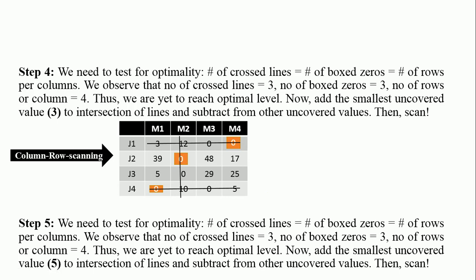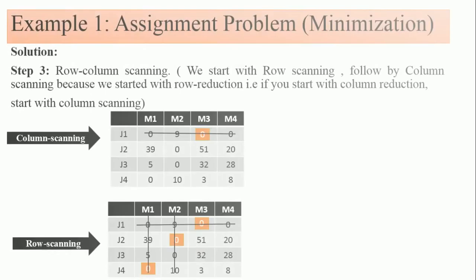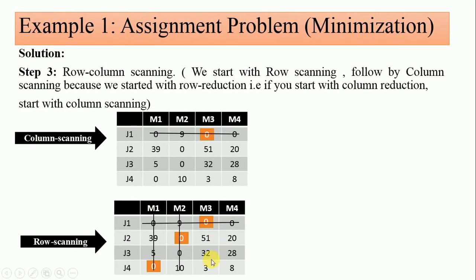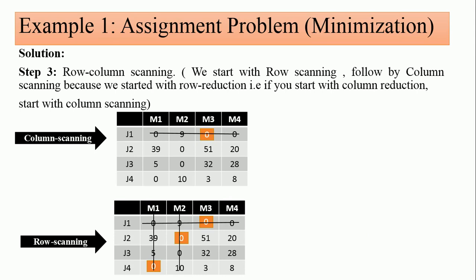From the scanning table, you can observe that the smallest uncovered value is 3 — that is the smallest value that no line passes through. Subtract this 3 from all corresponding uncovered values: 3 minus 3, 8 minus 3, 28 minus 3, 32 minus 3, 51 minus 3, 20 minus 3. You also add the same 3 to the point of intersection of lines, so at the intersection under j1-m1 it becomes zero plus three.